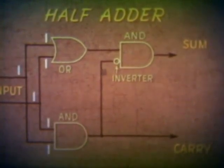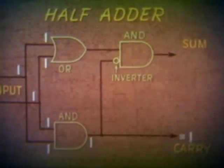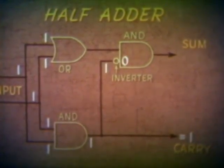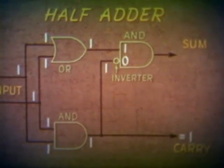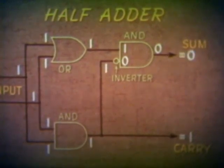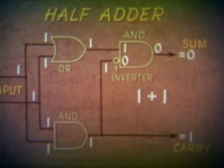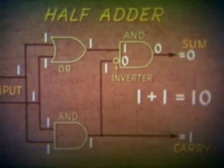With both inputs ones, there will be a one at the first AND gate and a carry one output. Because of the inverter, there is a zero at the second AND gate input. With ones on the OR gate, there will be a one output. Therefore, the output of the AND gate must be zero, resulting in a sum of zero. Thus, one plus one equals zero plus a carry — that is, binary 10 — again conforming to the rule.